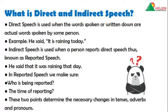Direct speech is used when the words spoken or written down are the actual words spoken by some person. The exact words that the person said are placed in quotation marks — in direct speech, you always write the spoken words inside quotation marks, which is called an exact quote. After 'said' there is always a comma, and remember the full stop is always placed inside the quotation marks.